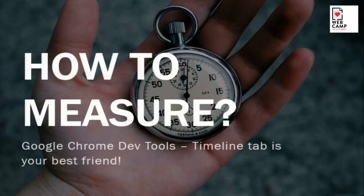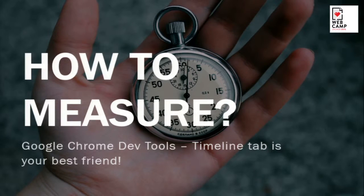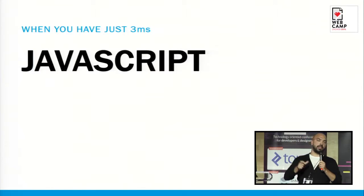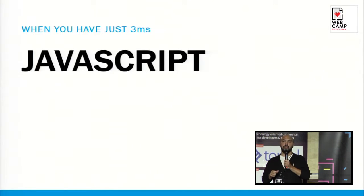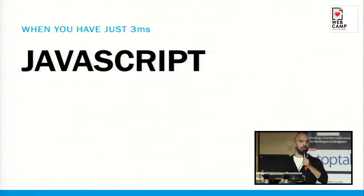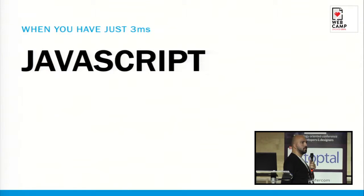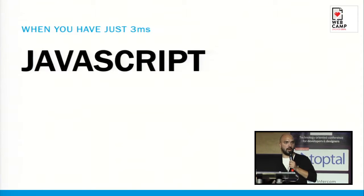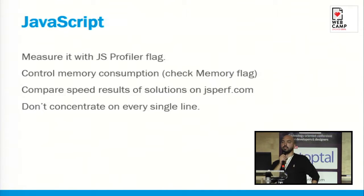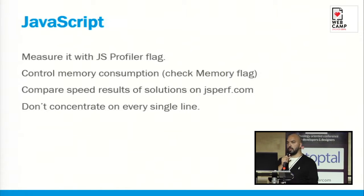So how do we measure whether we're meeting each budget? Are we matching the budget for every one of those states? Just by using the Chrome DevTools Timeline tab. So I will show you how to measure each of those browser tasks. For JavaScript, we saw earlier that we have just 3 milliseconds to run our JavaScript. When we run the Timeline tab and record our behavior, we have to check the JS profiler flag, and then we can see how long each function takes to run.